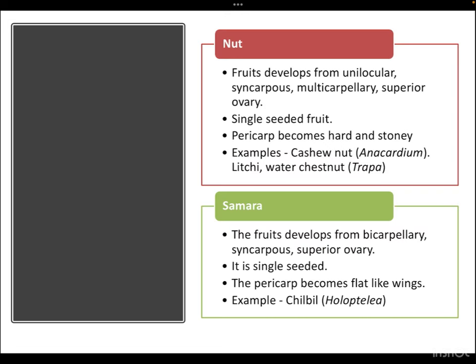Nuts are fruits developed from unilocular syncarpus multicarpillary superior ovary. These are single-seeded fruits and the pericarp becomes hard and stony. Examples of nuts as dry fruits include walnut, cashew, hazelnut, foxnut, and also lychee and water chestnut (singhada in Hindi). Samara is the next category: fruits developed from bicarpillary syncarpus superior ovary, single-seeded, where the pericarp becomes flat wing-like structures. The example includes Chilbill or Holoptelea.